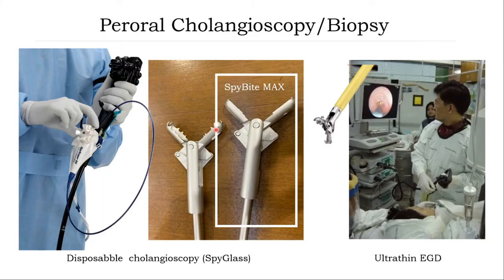This picture shows vision-guided biopsy with peroral cholangioscopy. On the left-hand side is the SpyGlass DS disposable cholangioscope, and on the right-hand side, the alternative EGD scope for biopsy of bile ducts. Even for the alternative EGD scope you can get more biopsy, but it is difficult in terms of scope insertion. SpyGlass DS can now provide bigger biopsy forceps — the new model SpyBite Max.